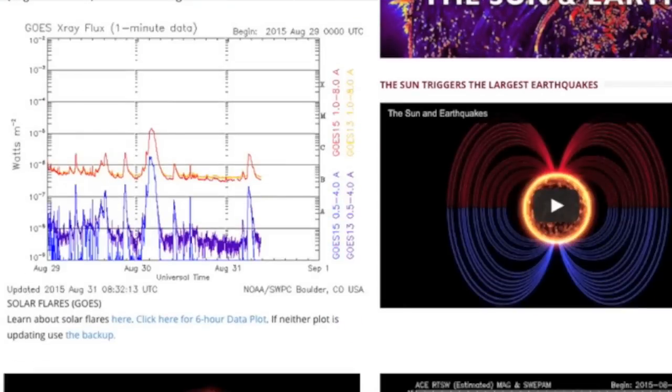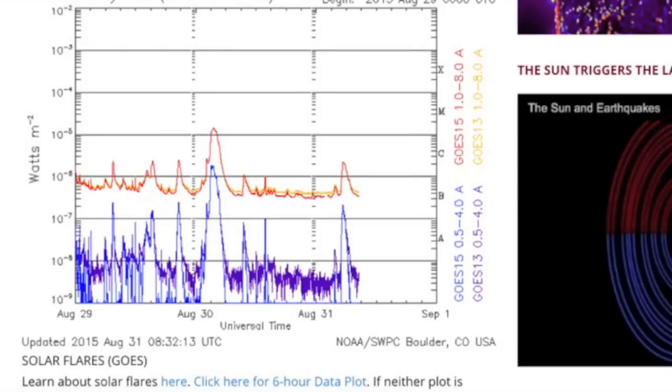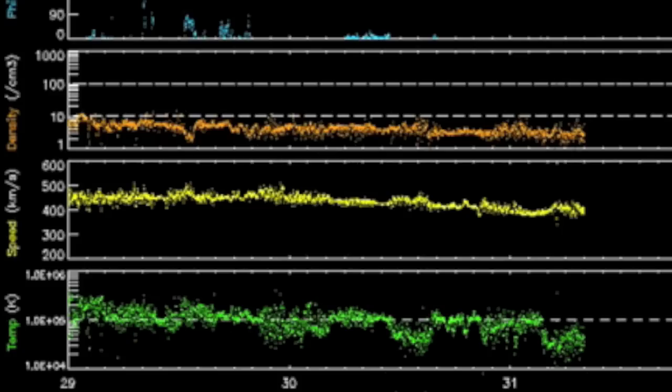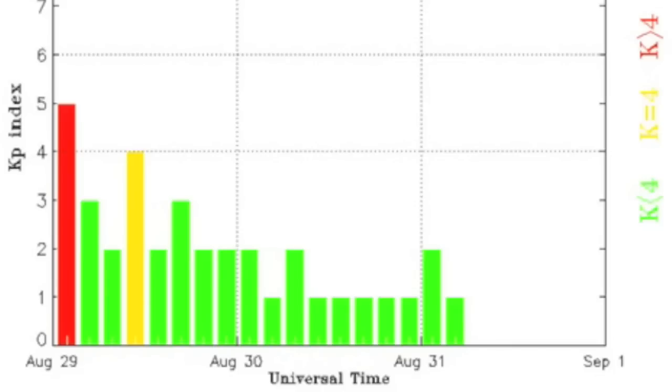Coming to spaceweathernews.com, we find solar flaring back to quiet without sunspots to make them. The solar wind and magnetic instability are calming, but the departing corona hole should change that by tomorrow night or Wednesday.